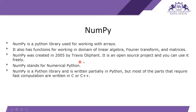NumPy was created in 2005 by Travis Oliphant. It is an open source project and you can use it freely — there is no cost for that. NumPy stands for Numerical Python, which is self-descriptive: for doing numerical and mathematical operations we use this NumPy library, that's why they named it Numerical Python, or NumPy for short.